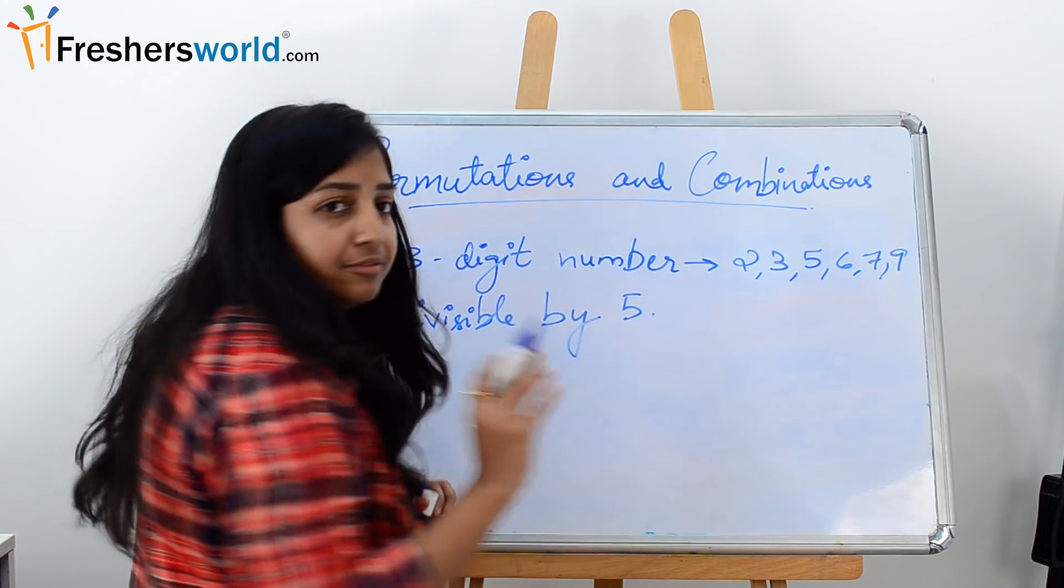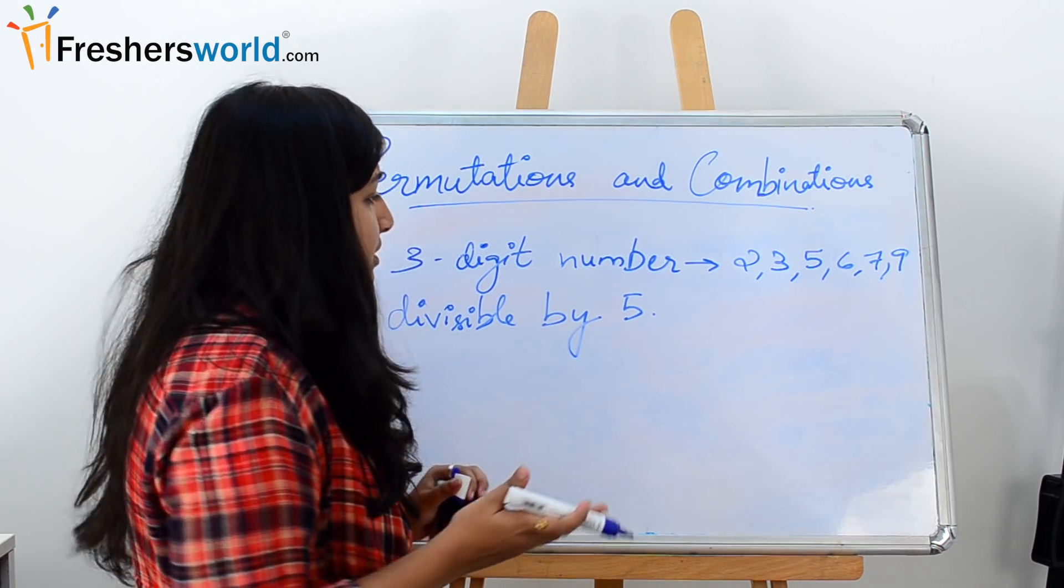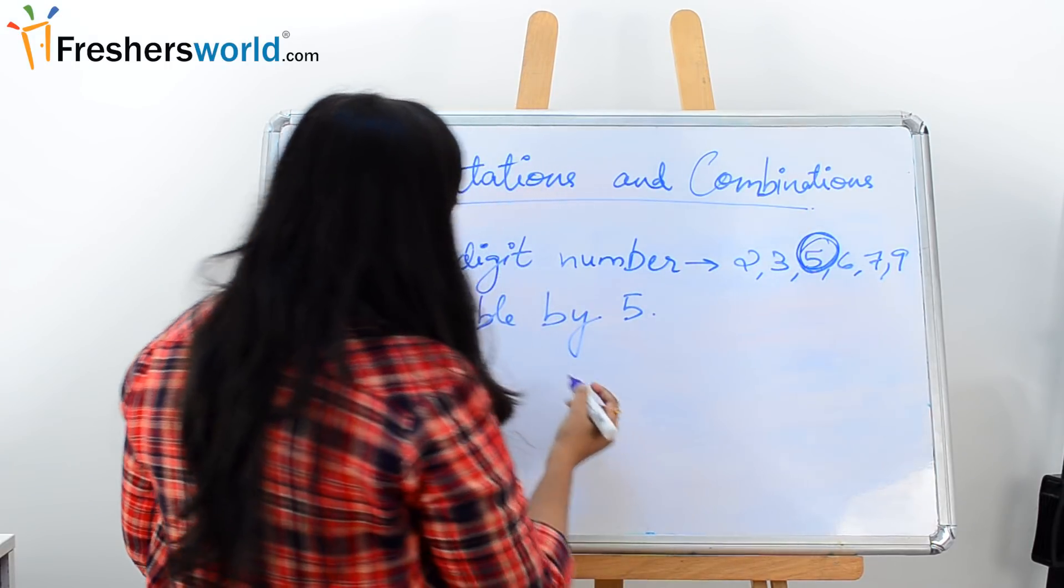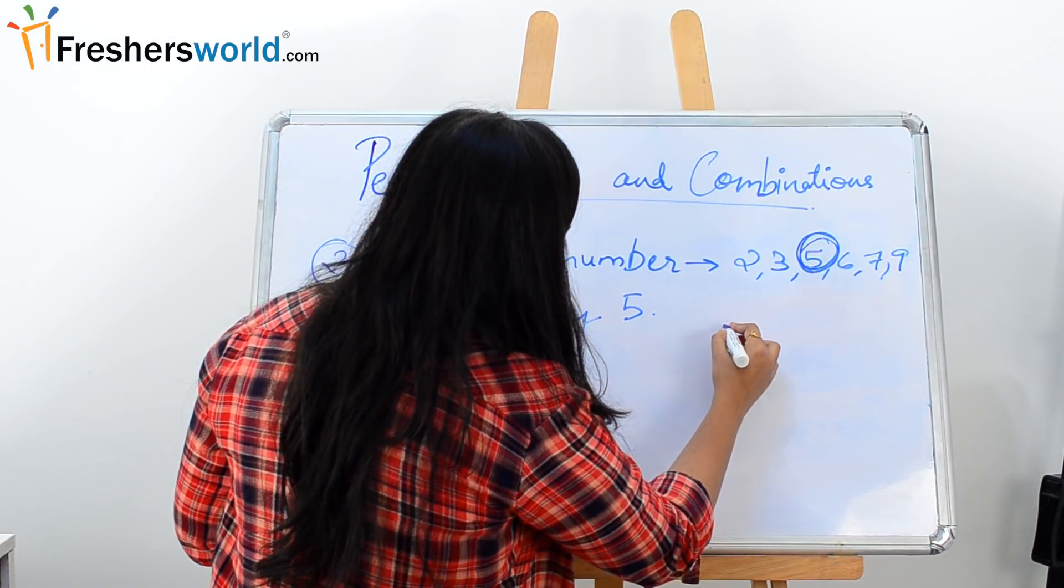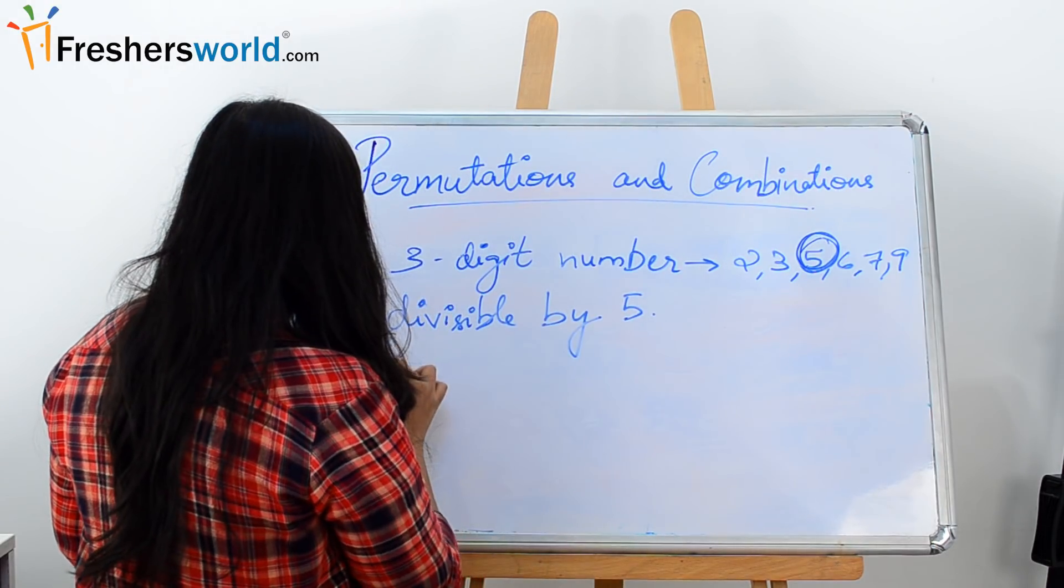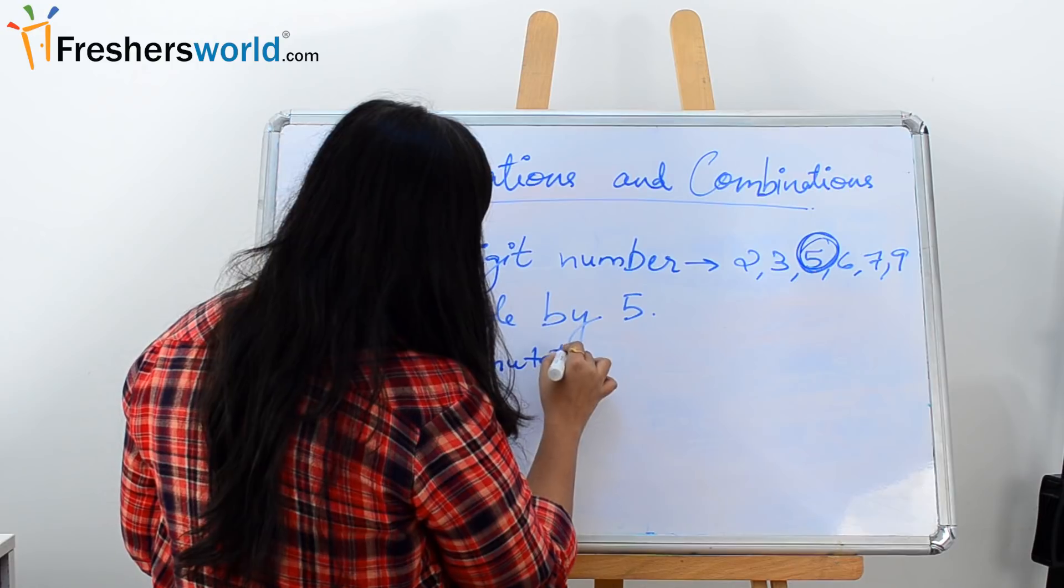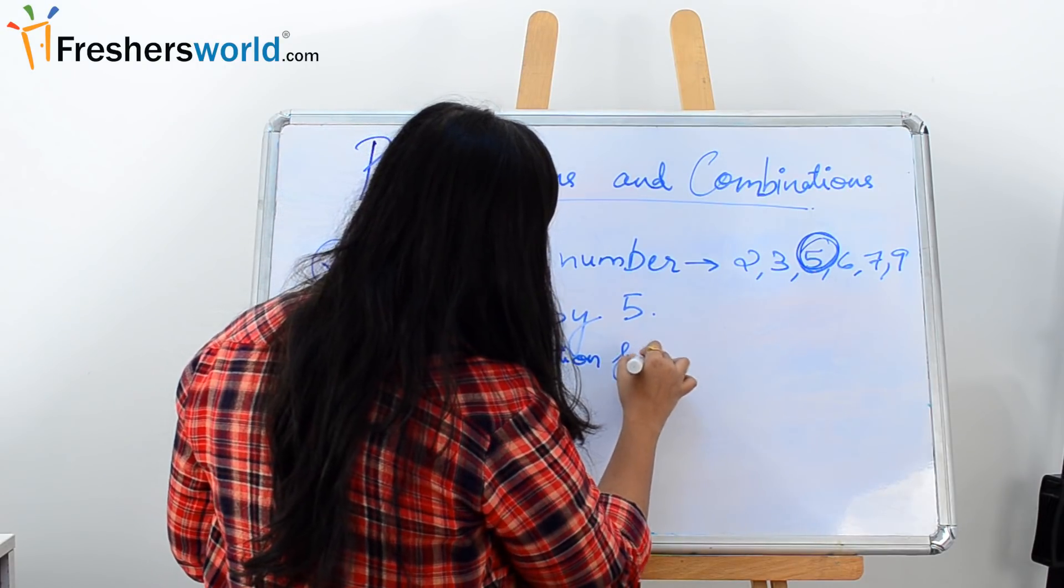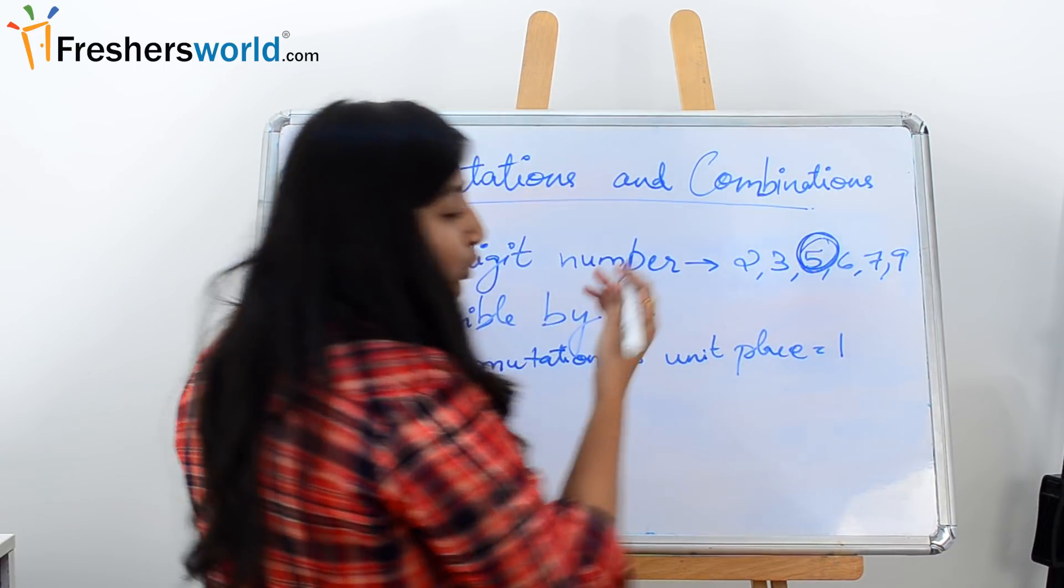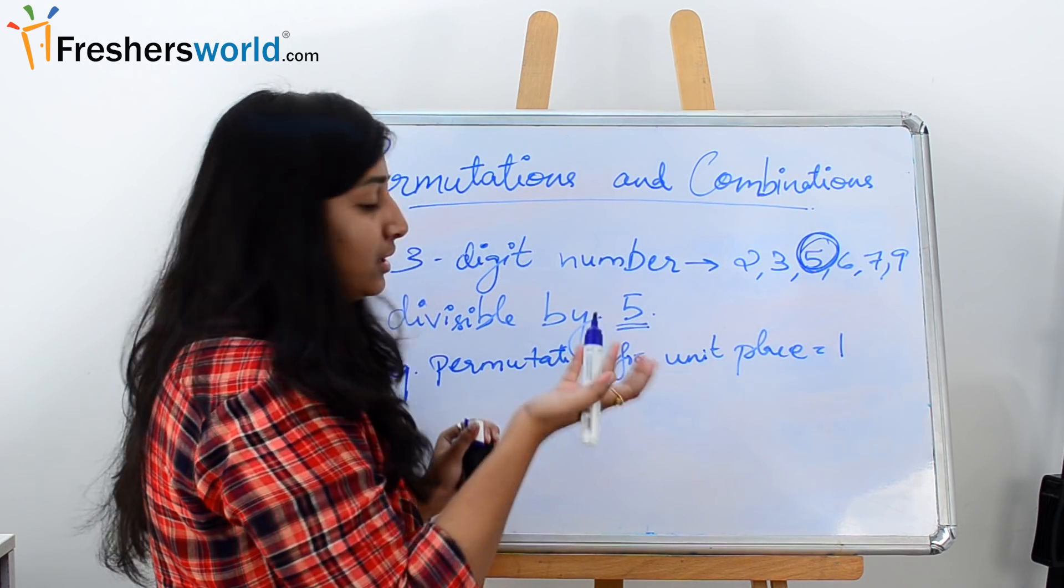First of all, we will start with the unit place. Since it is divisible by 5, it is obvious that the unit place can have only digit 5. So unit place 5, so the permutation for 5 will be 1. So the first required permutation we get for unit place is 1, because there is only one way that we can add 5 to the first position. So 1.